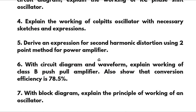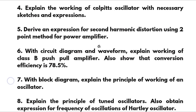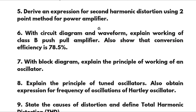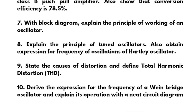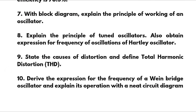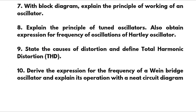Derive the expression for second harmonic distortion using the two-point method for a power amplifier. With circuit diagram and waveform, explain the working of class B push-pull amplifier and show that the conversion efficiency is 78.5%. With block diagram, explain the principle of working of an oscillator. Explain the principle of tuned oscillators and obtain the expression for frequency of oscillations of a Hartley oscillator. State the causes of distortion and define total harmonic distortion (THD). Derive the expression for the frequency of a Wien bridge oscillator and explain its operation with a neat circuit diagram.